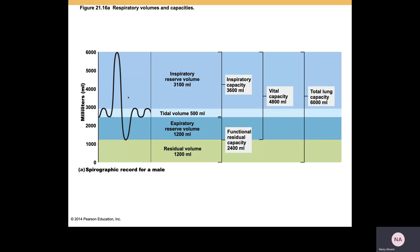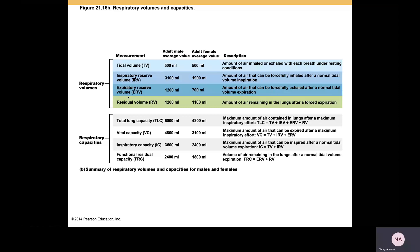Vital capacity is going to be the amount of air that you can breathe in and out, whether it be tidal volume or forced inspiration or expiration. And total lung capacity is going to be all of the air in your respiratory tract, as indicated here.